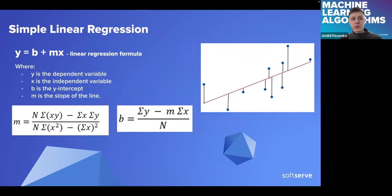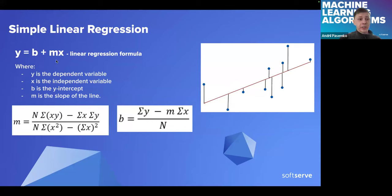Let's look at how the algorithm actually works. What we're trying to do is minimize the error between all those data points and our regression line — draw this line so that the errors for each data point are minimal. Anyone who studied math knows how the equation of a straight line looks. Basically, Y equals B plus M times X, and this is the linear regression formula.